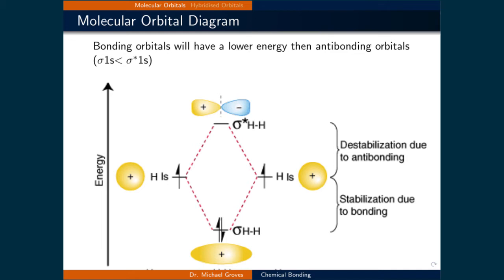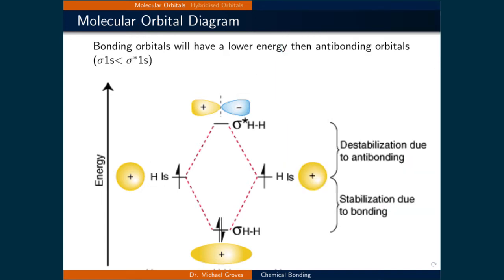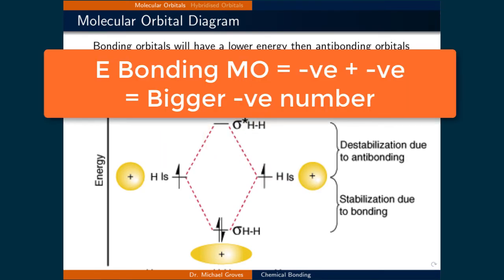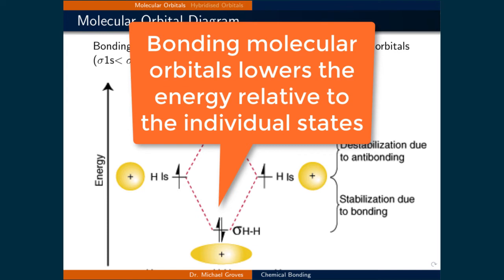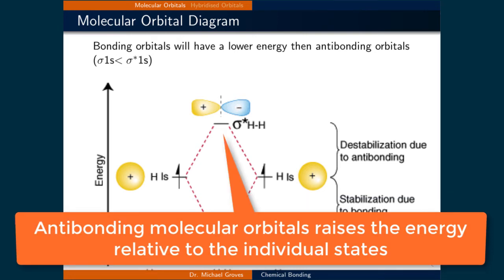Let's now look at the relative energies of bonding and antibonding orbitals using H2 as a simple example. We have two 1s orbitals, each with one electron, forming a bonding and an antibonding orbital. The energy of the 1s state is a negative number. For the bonding orbital, a negative number plus a negative number gives an even more negative number, so bonding orbitals stabilize molecules. For the antibonding orbital, a negative number minus a negative number gives a less negative or even positive number, destabilizing the molecule. Therefore, the energy of bonding orbitals is lower than that of antibonding orbitals.